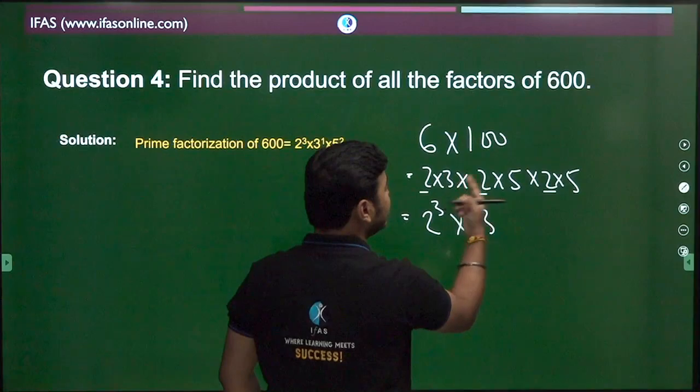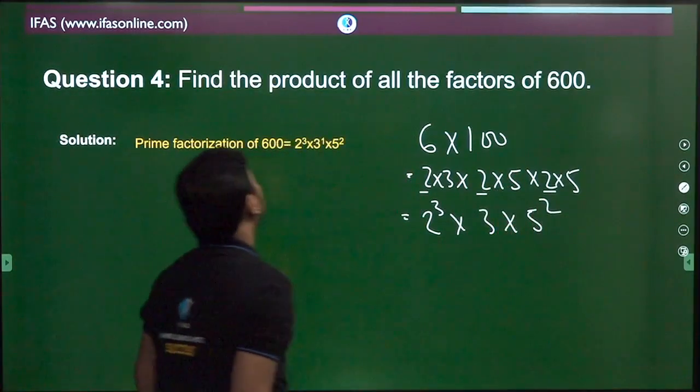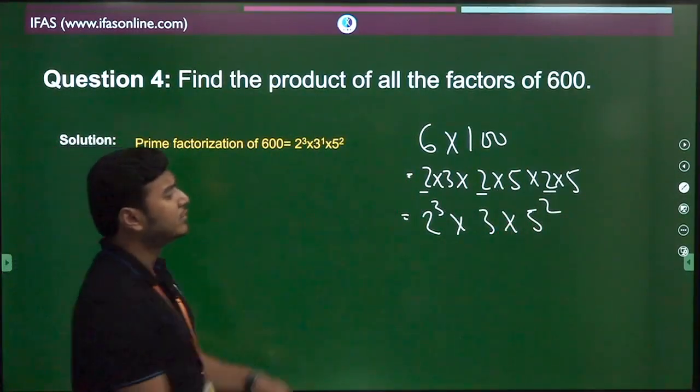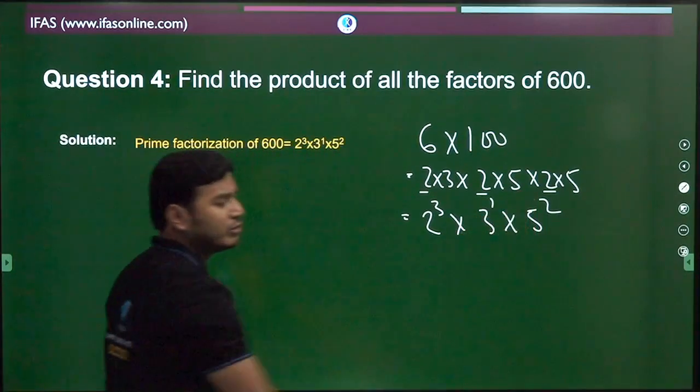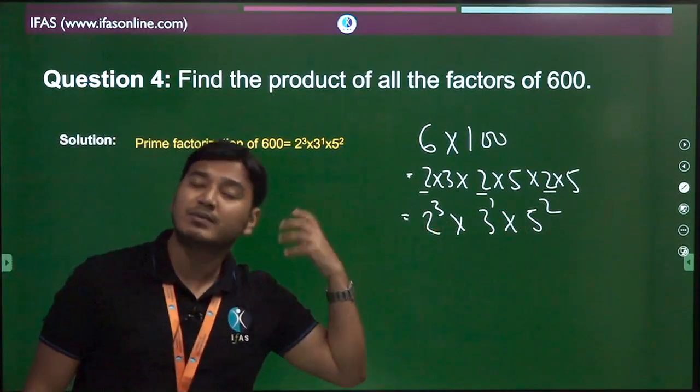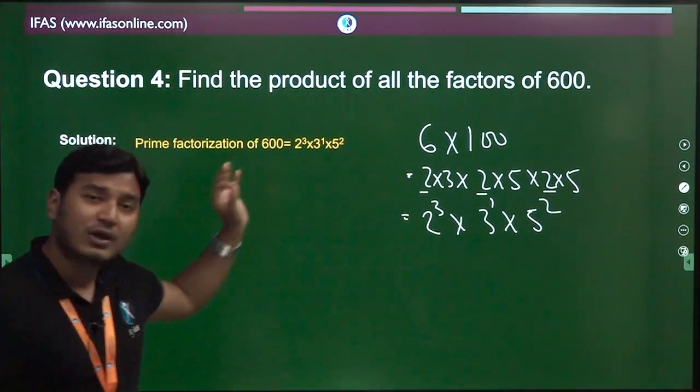Then 3 to the power 1, and 5 is squared. So you see, students: 2 cube, 3 to the power 1, and 5 to the power 2. How easy it is to find the prime factorization! It took just a few seconds.